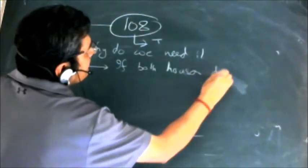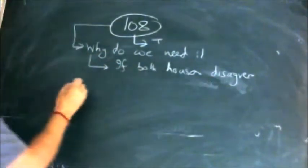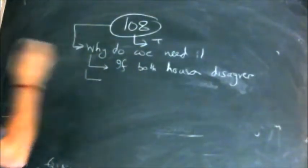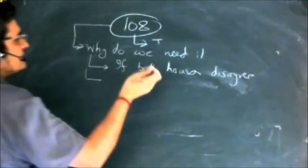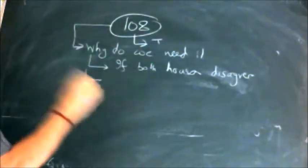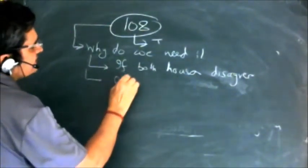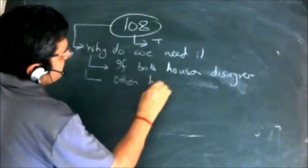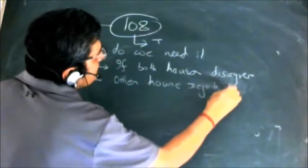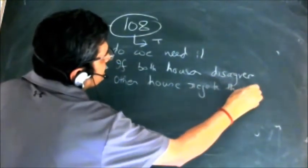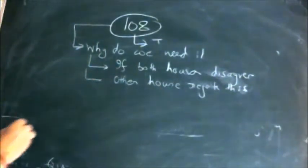The answer to the why is: if both the houses disagree. If they disagree, there is a disagreement - certain amendments have been suggested, or partially it is agreed, partially it is not agreed. So there is a disagreement on certain matters pertaining to that bill, or if the other house outrightly rejects the bill.